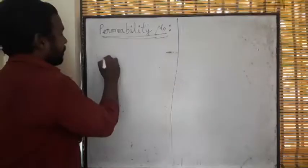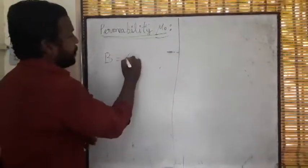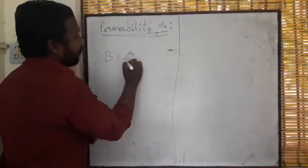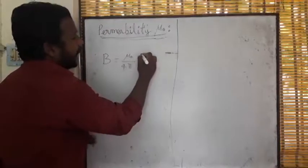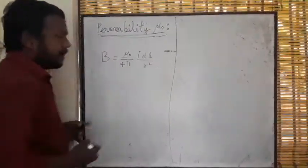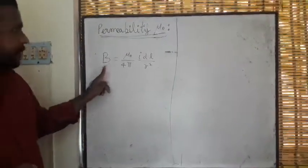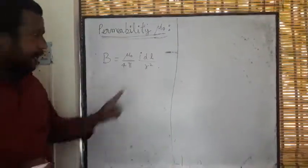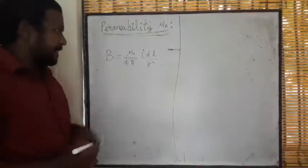As we know, B is a magnetic field: mu naught divided by 4 pi I D L by R squared. B is a magnetic field measured in Tesla, I is current in ampere, length is a meter, radius is a meter.